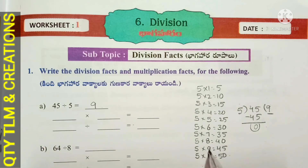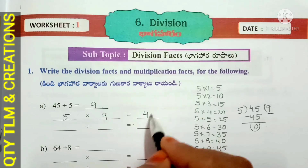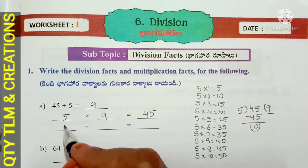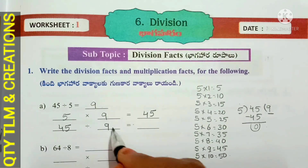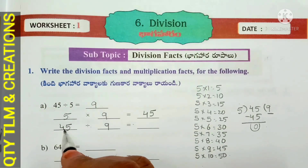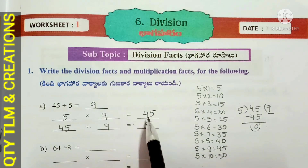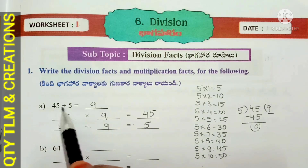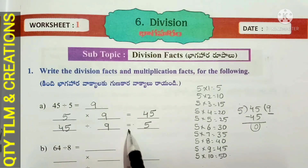Next, the multiplication facts: 5 nines are 45. And 45 divided by 9 equals 5. For each multiplication fact, there are two division facts: 45 divided by 5 is equal to 9, and 45 divided by 9 is equal to 5.